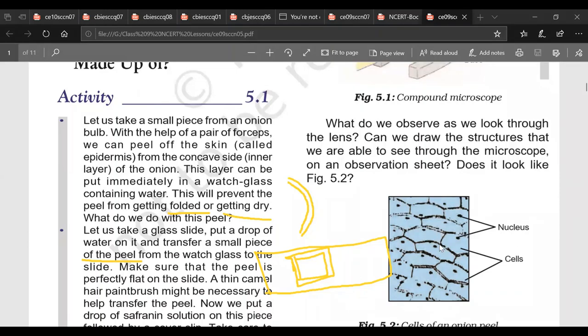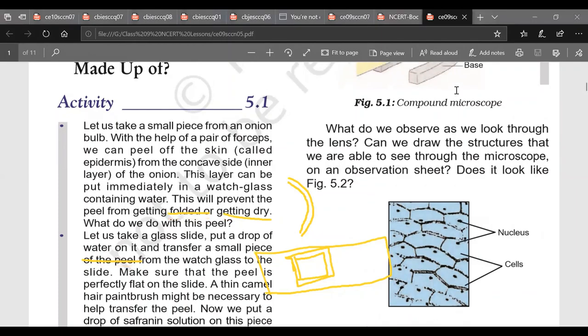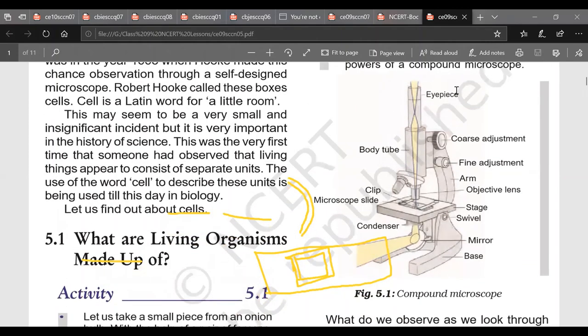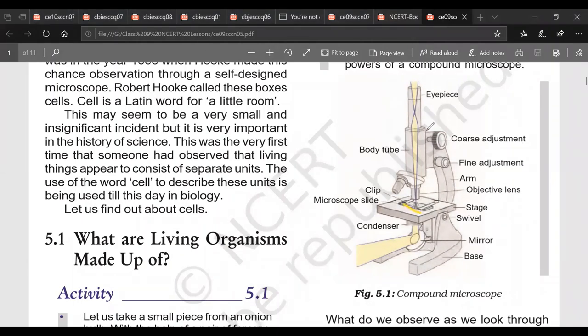And when we observe this slide under the microscope, this is compound microscope and it is made up of eyepiece lens because here we are seeing through this lens. Then this side is objective lens. This is stage on which we are keeping our slide. So here we are keeping our slide. Then this is coarse adjustment. This is fine adjustment. First of all we are using coarse adjustment.